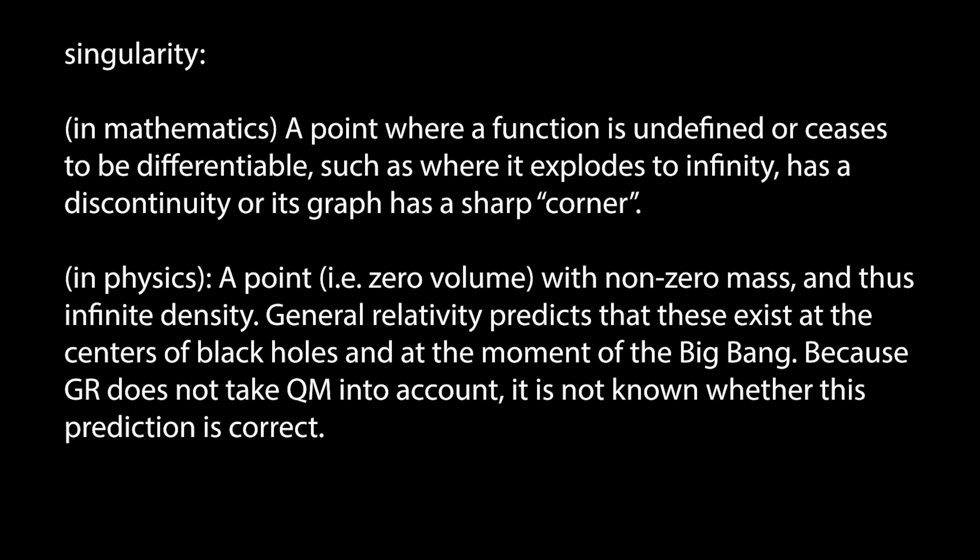For the record, in mathematics a singularity is a point where a function is undefined or ceases to be differentiable. This happens, for example, where it explodes to infinity or where its graph has a sharp corner. In physics, a gravitational singularity is a point with non-zero mass and zero volume. In other words, infinite density and thus infinite space-time curvature. General relativity predicts that these exist at the centers of black holes and at the Big Bang. But because they have zero volume, they are, to say the least, very tiny. The physics of the very tiny is not general relativity. But quantum mechanics, these don't play nice with each other. So right now, we don't know if gravitational singularities actually exist in nature. Or if quantum mechanical rules we don't yet know of put some kind of limit on how dense matter can get. But what it means for us is that a photon that came into existence from our perspective one second after the Big Bang, 13.8 billion years later, to today, has not aged one second.